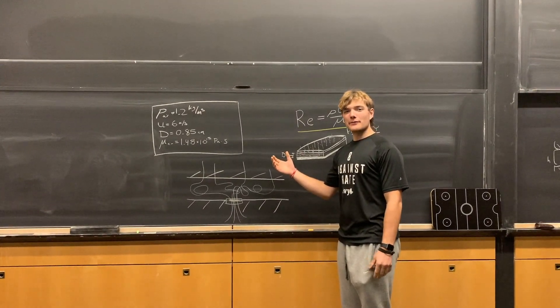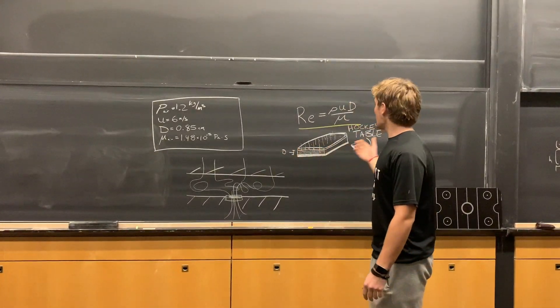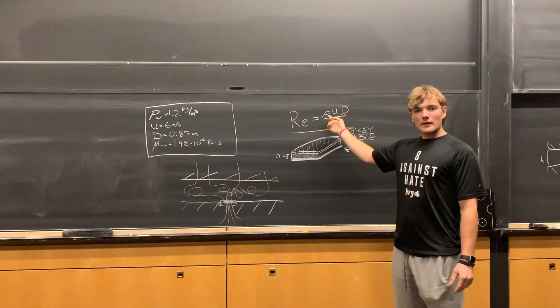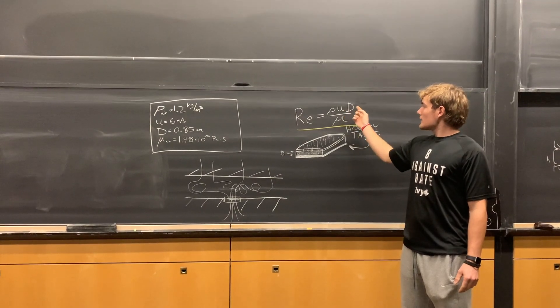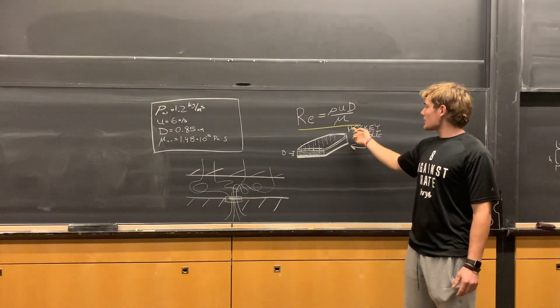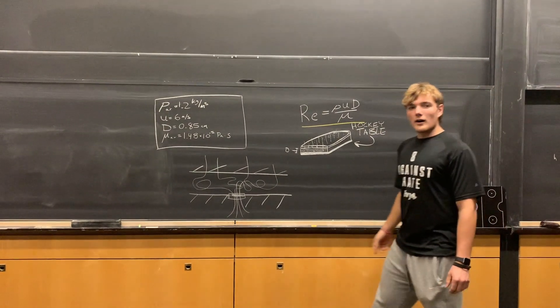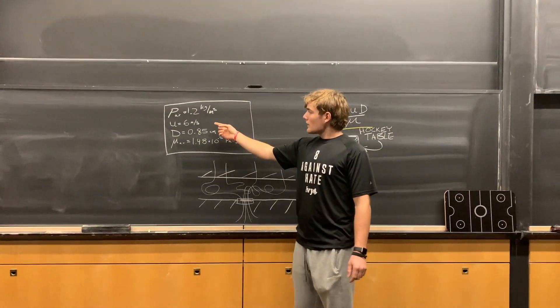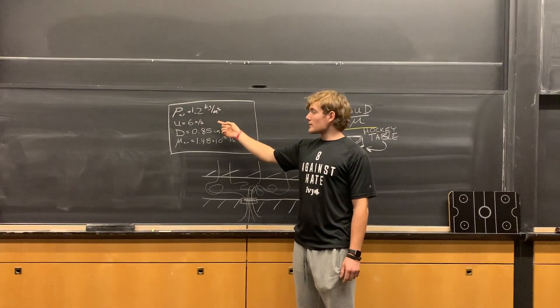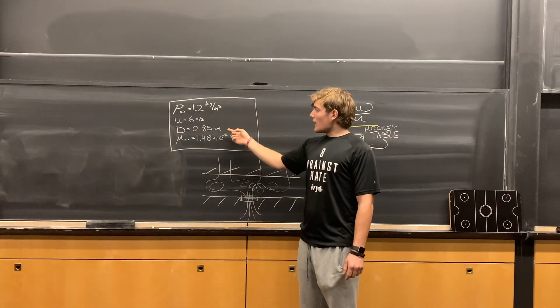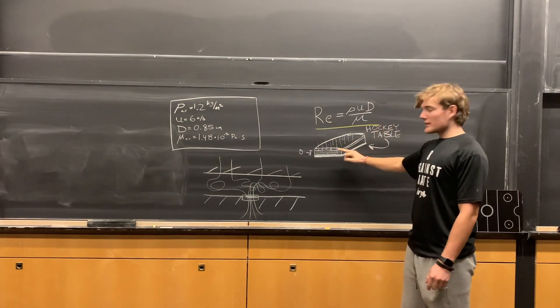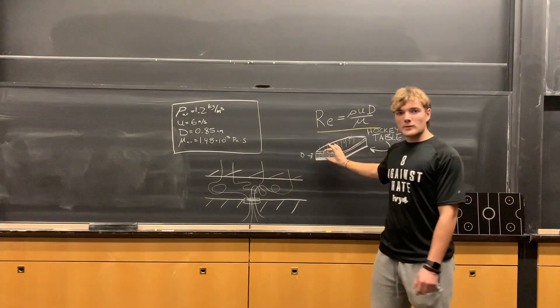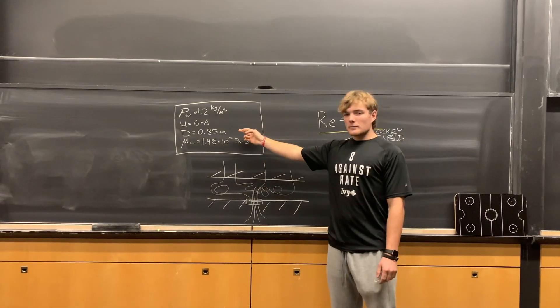We're going to calculate the Reynolds number flowing through the air hockey table. We know the Reynolds number equation is equal to the density of the fluid times the speed of the fluid times the specific length divided by the viscosity. We know the density of air is 1.2 kilograms per meter cubed. We calculated the speed of the air to be 6 meters per second. We're going to model the air hockey table as two flat plates where the specific length is the distance between two plates, which we measured to be 0.85 centimeters.